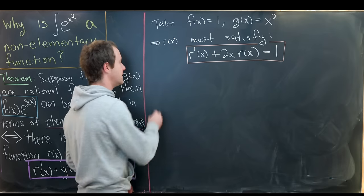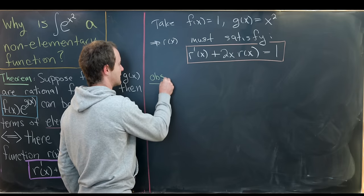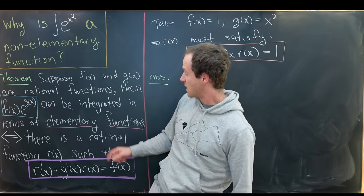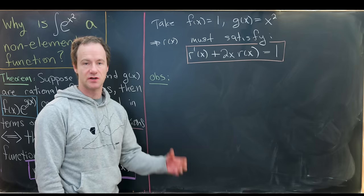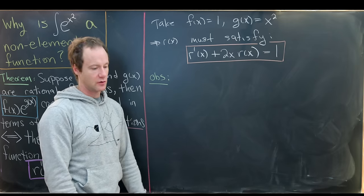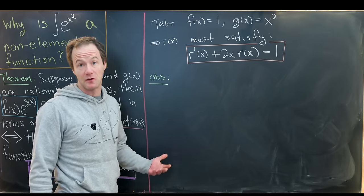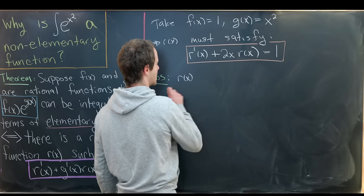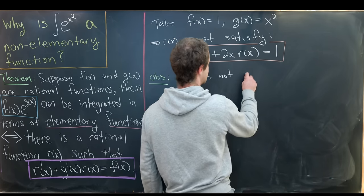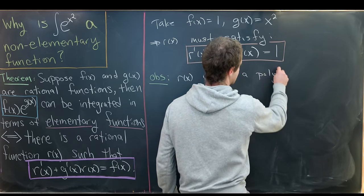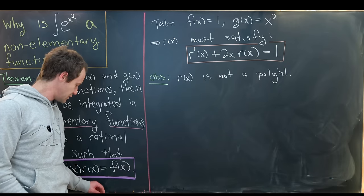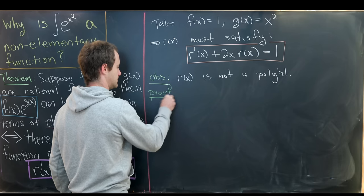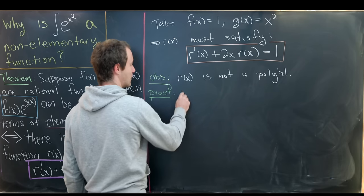Before we move any further, I want to make the following observation about r(x). We know r(x) is a rational function — a ratio of polynomials. So r(x) could potentially be a polynomial, but in fact that is not possible. We'll prove that r(x) is not a polynomial by way of contradiction.